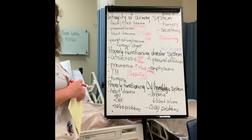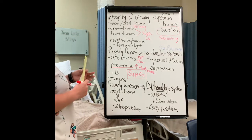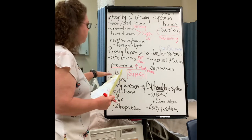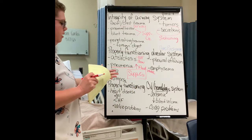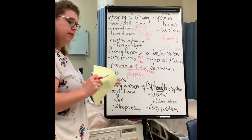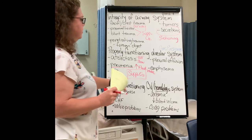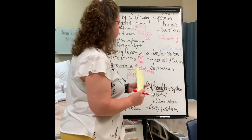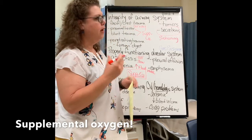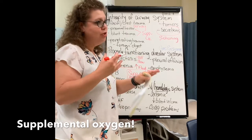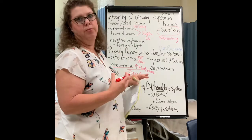If they have TB, remember isolation precautions. But how are we going to help them with gas exchange? Basic things like positioning — they need to be sitting straight up in bed. Offer supplemental oxygen and administer the medications that are prescribed. The same applies to tumors and emphysema. Supplemental O2 is critically important — the whole problem with a gas exchange problem is they're not exchanging oxygen and carbon dioxide, so we've got to figure out a way to help them.